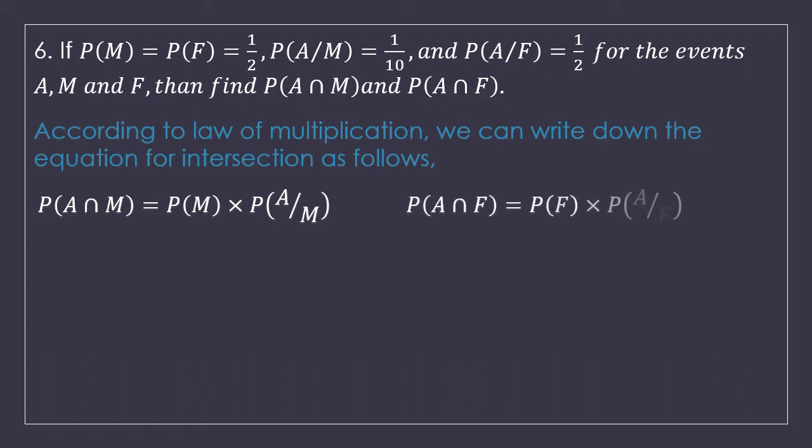Similarly, P(A intersection F) will be P(F) multiplied by P(A given F), because these values are given. The most important thing for solving this question is to remember the formulas. You have to compile all those formulas, revise them continuously and practice applying them to questions. That way, you will be able to solve them this fast.